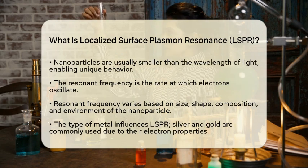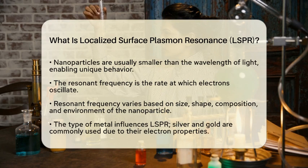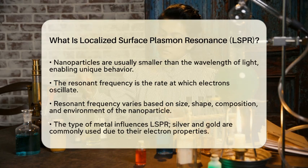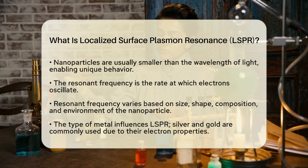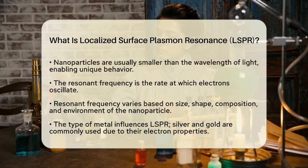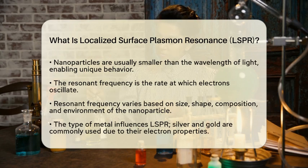From a chemistry standpoint, the type of metal used plays a significant role in LSPR. For example, metals like silver and gold have electrons in their d orbitals, which influence how these electrons oscillate. This property is why these metals are often chosen for plasmonic applications.